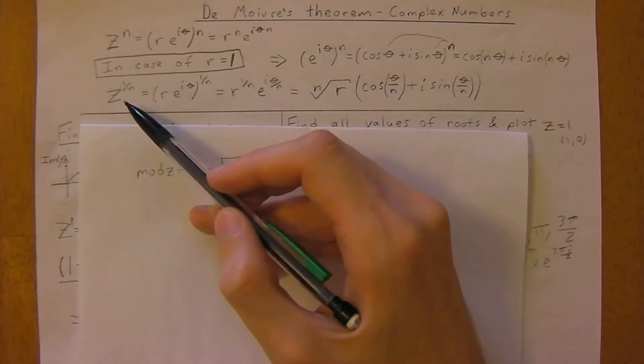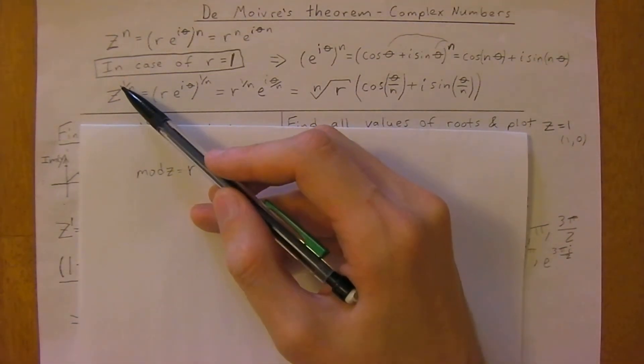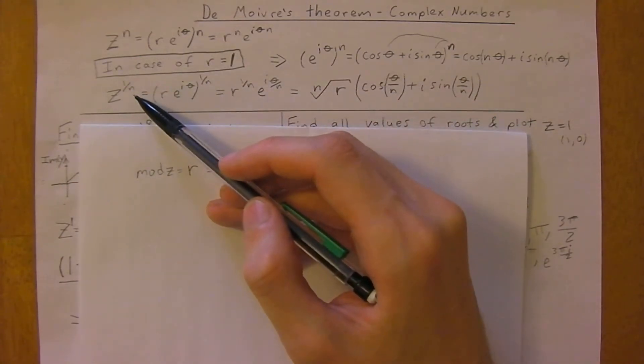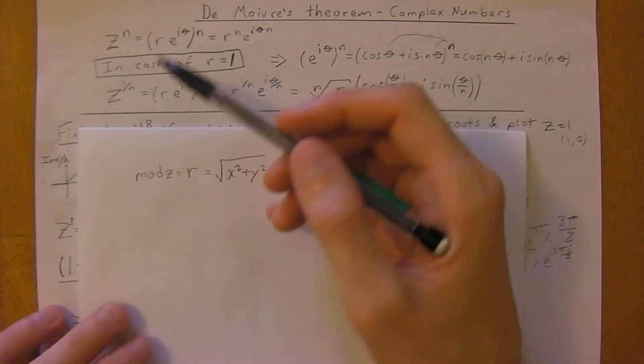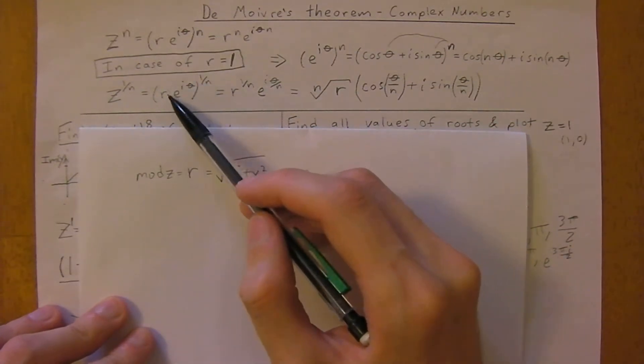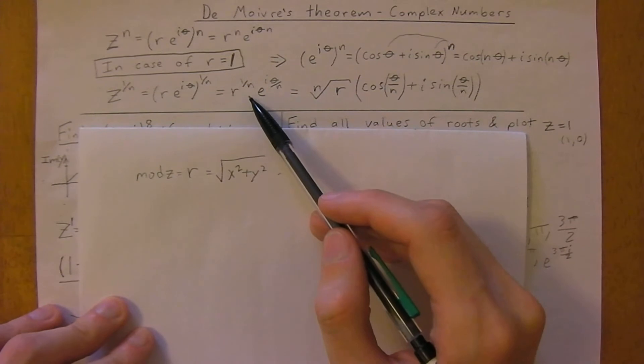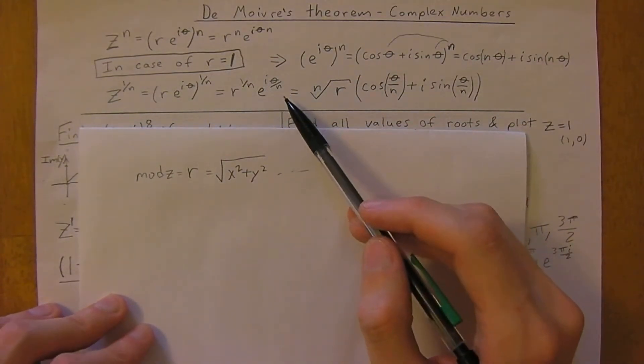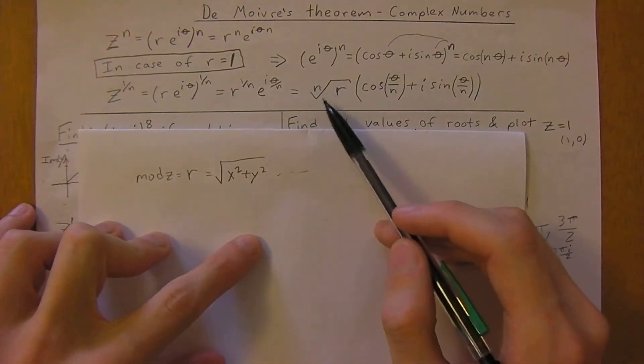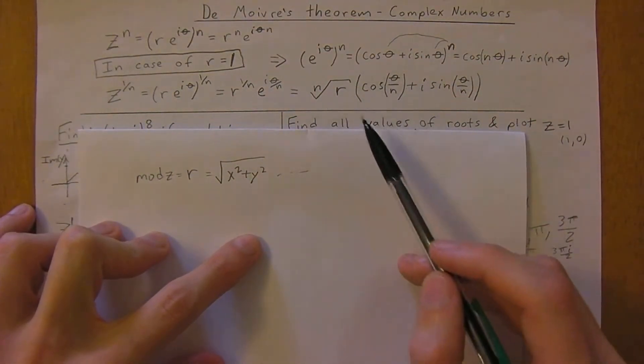Another example is when you have z to the 1 divided by n, say a square root or cubed root. Then you would follow this similar process and multiply by both these terms: get r to the 1 over n and e to the i theta divided by n.